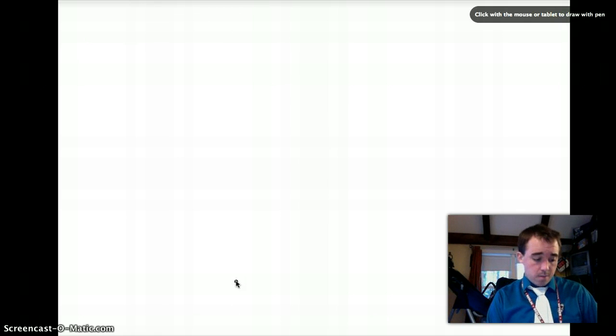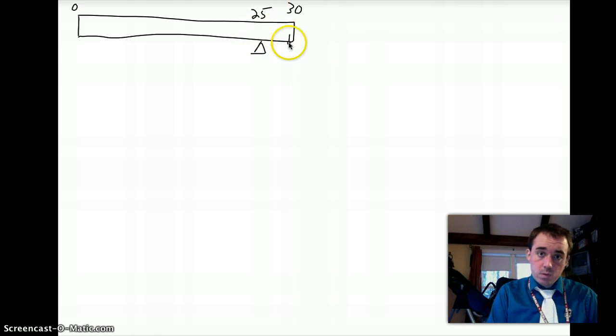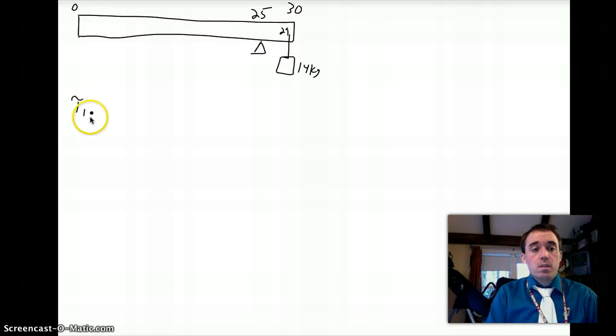All right, so next problem is you have a 30-meter long bridge or support or crossbar, supported at the 25-meter mark with a 14-kilogram mass hanging at the 29-meter mark. So I'm going to set up my torque, my three different torques, torque 1, torque 2, and torque 3.